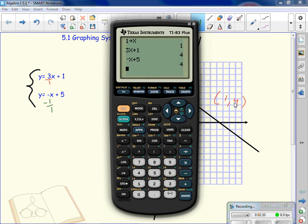If I pick the number 4 and I store 4 into x. When I use the first equation, 3x plus 1, I get 13. When I use negative x plus 5, I get 1. They're not the same answer. The only one that will give me the same exact answer is 1, 4. And that's my solution.